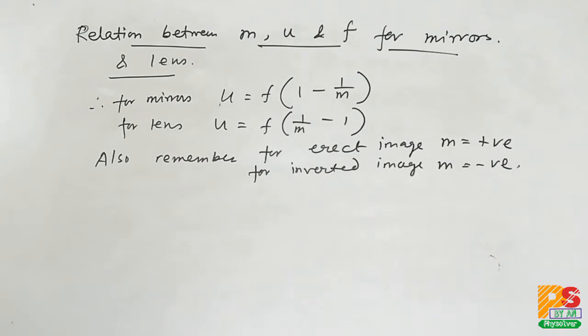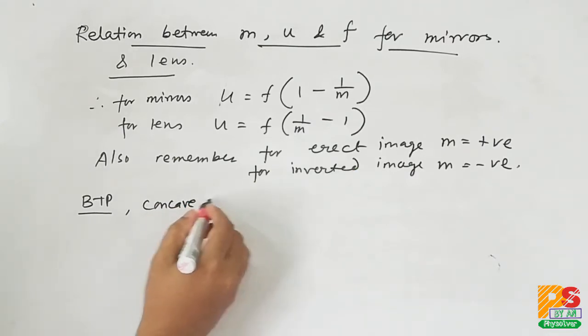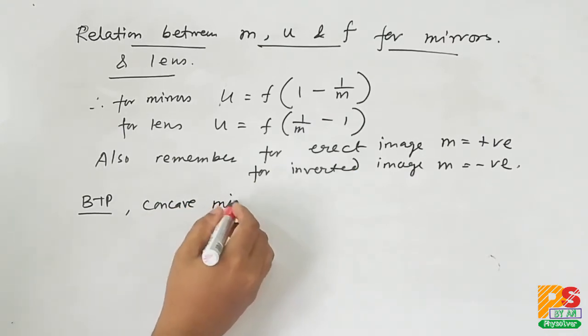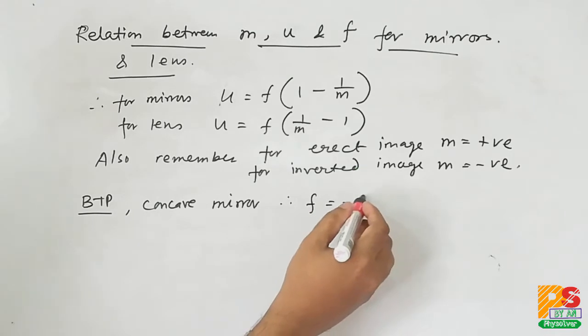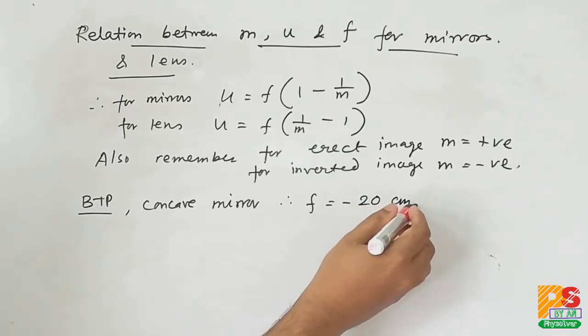Now coming to the problem. Here it is given a concave mirror, so f will be negative, that is minus 20 centimeters.